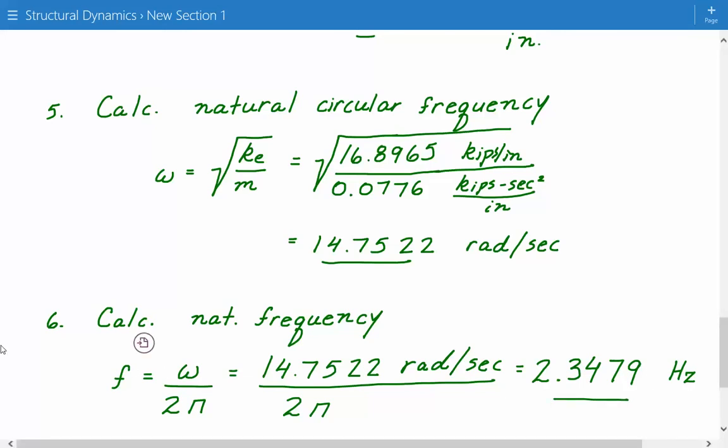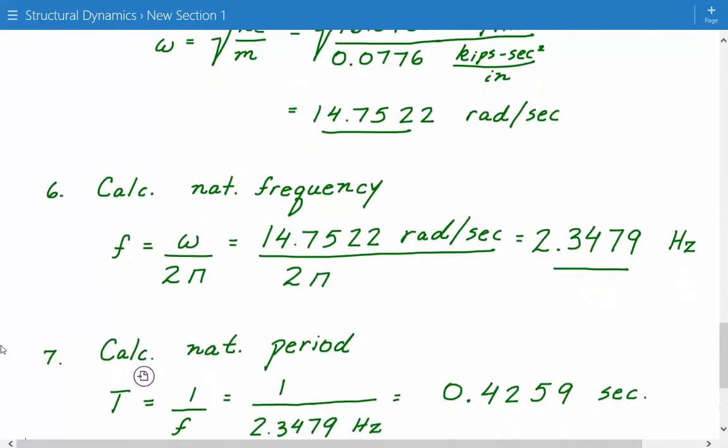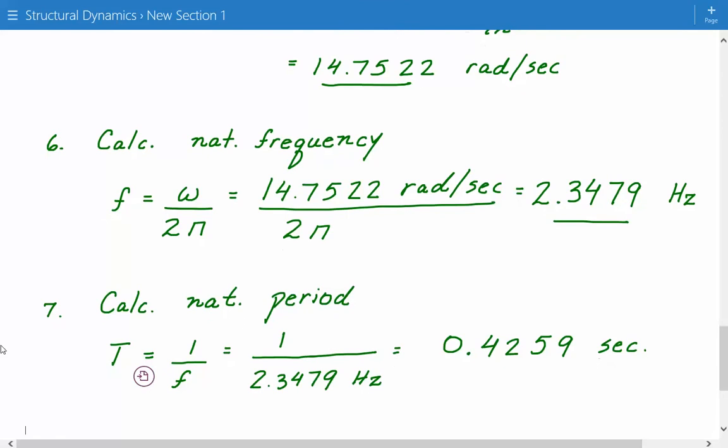And finally, we can calculate our period, which is just going to be the inverse of the natural frequency. So the period T is equal to 1 divided by the natural frequency. So 1 divided by 2.3479 hertz. This gives us a period of 0.4259 seconds.